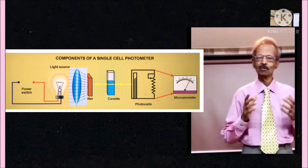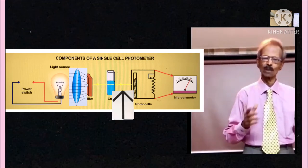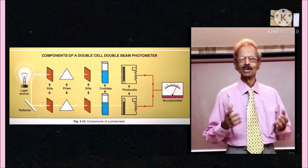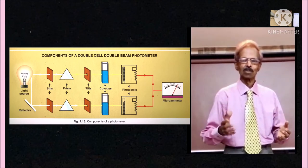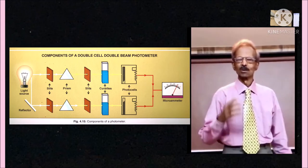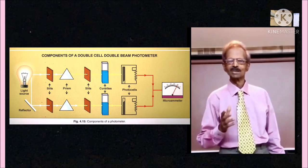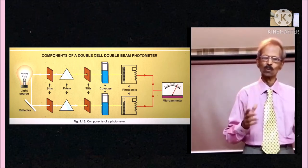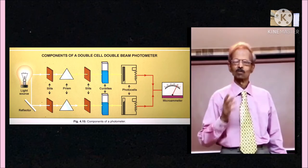These are components of single cell and single beam photometer as there is only one photocell and one beam of light transmitted. These are the components of double cell and double beam photometer since there are two photocells and two light beams. These photometers work accurately when electrical fluctuations occur.